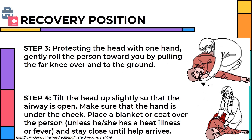gently roll the person toward you by pulling the far knee over into the ground. Step 4: Tilt the head up slightly so that the airway is open. Make sure that the hand is under the cheek. Place a blanket or coat over the person, unless he or she has a heat illness or fever, and stay close until help arrives.